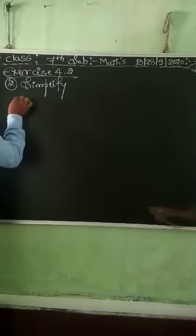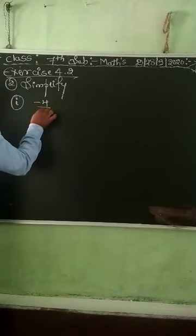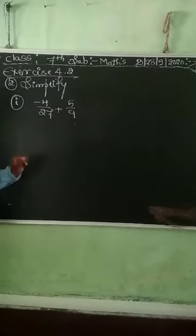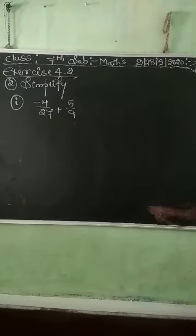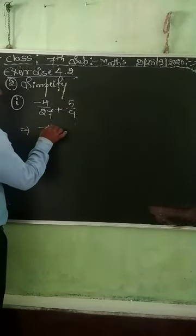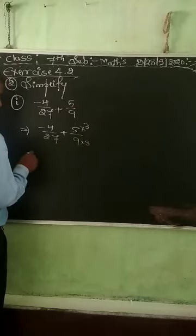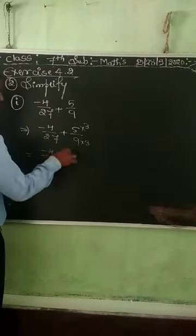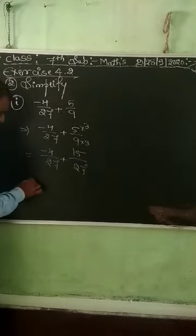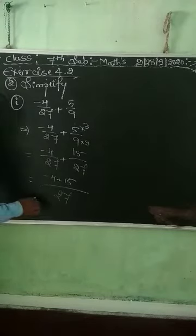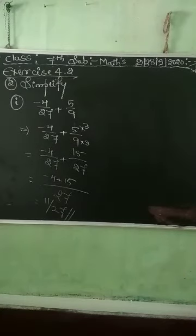Second question — simplify: minus 4 by 27 plus 5 by 9. Convert 5/9 by multiplying numerator and denominator by 3 to get 15 by 27. Now denominators are the same: minus 4 plus 15 equals 11. Answer is 11 by 27.